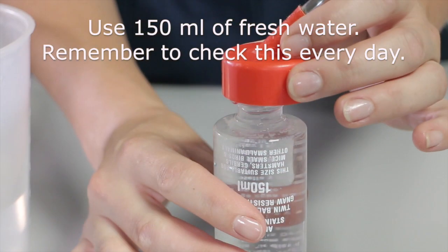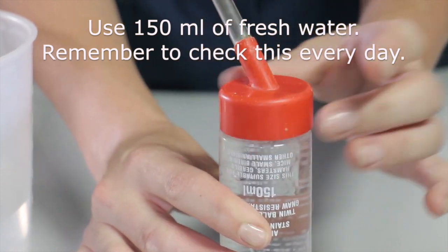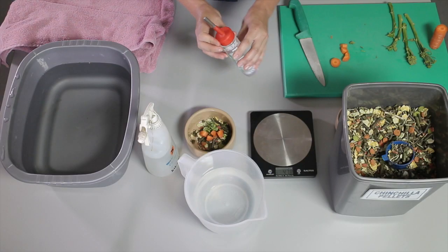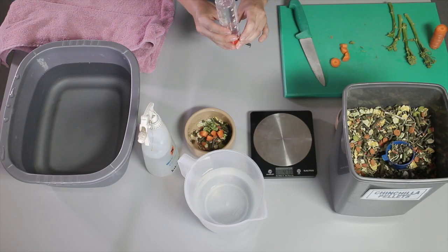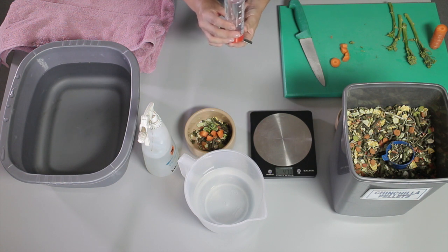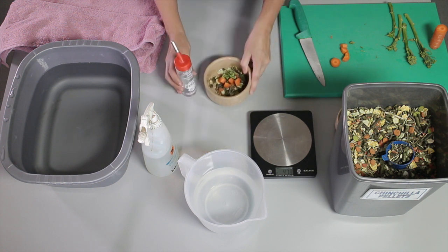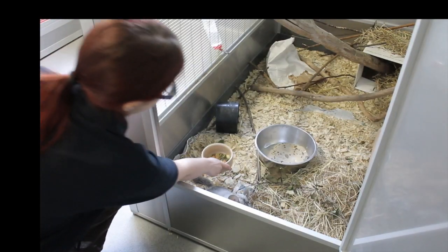I'm going to provide a full bottle. This can be secured to the cage, and then I can monitor the amount of water that the chinchilla has drunk overnight. So now I'm ready to offer these to the chinchilla.